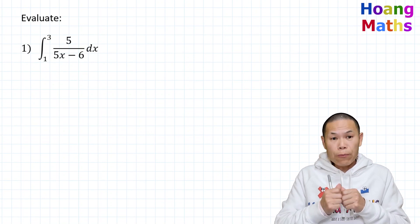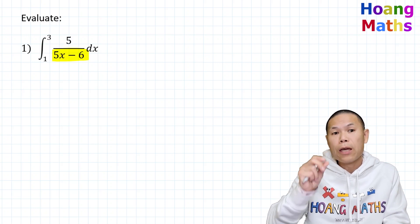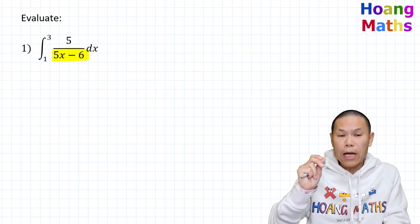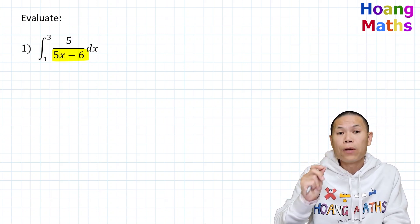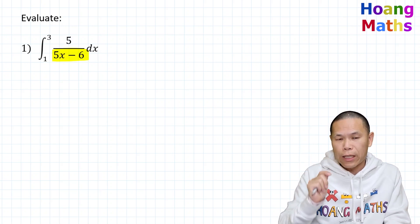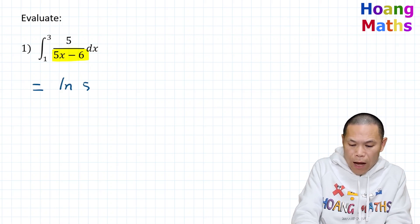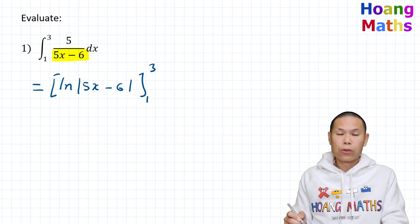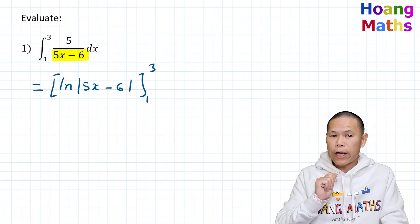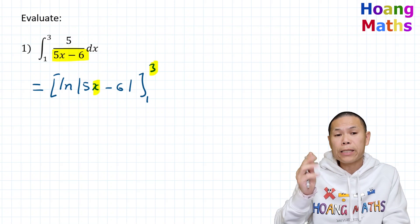First one. If you differentiate the function 5x minus 6, f'(x) gives me 5. So it becomes f'(x) over f(x). If we integrate that, it gives us ln|f(x)|. So f(x) is 5x minus 6, meaning the integral of 5 over 5x minus 6 gives ln|5x minus 6|, evaluated from 1 to 3.